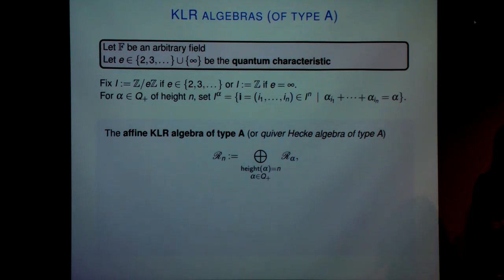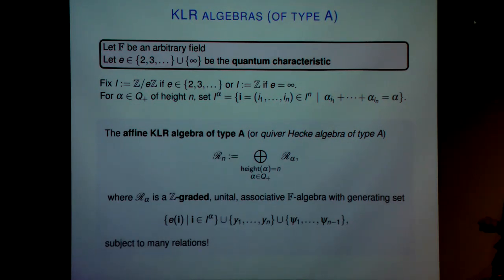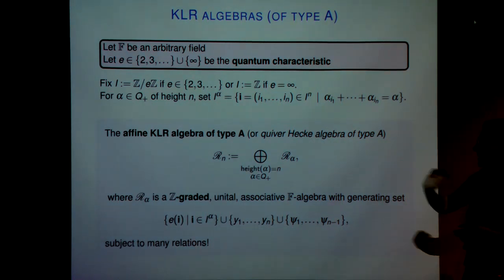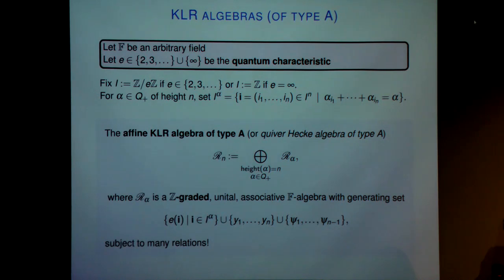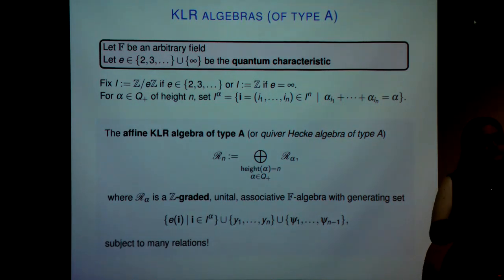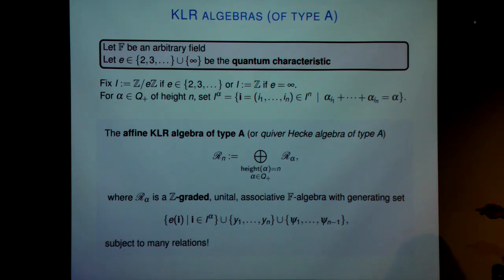We have our affine KLR algebra of rank n, and we can decompose it in terms of our positive roots of height n. Each of these has three sets of generators. As Ben Webster showed in his talk, the generators and many of the relations can be expressed in terms of diagrams. We've got our e_i's — our idempotents depending on some weights. We've got our y's, which are like our Jucys-Murphy elements — these are dots on our strings. And we've got our psi generators, which are our deformed symmetric group generators. This is a nice algebra because it exhibits a non-trivial Z-grading, which we can use to understand the ungraded representation theory.